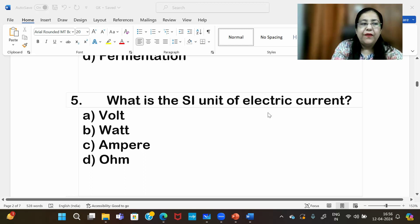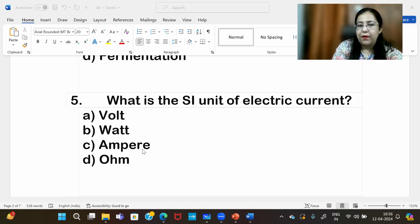What is the SI unit of electric current? The answer is option C, Ampere.